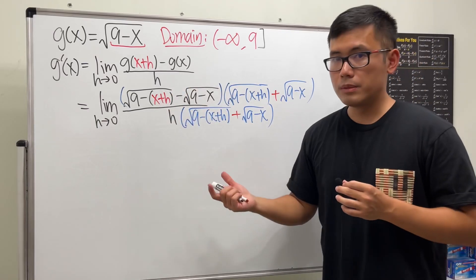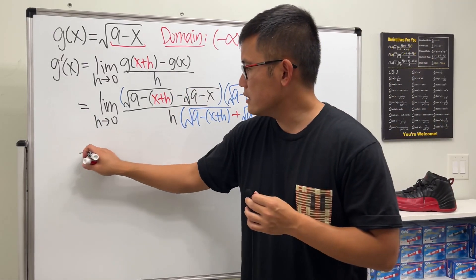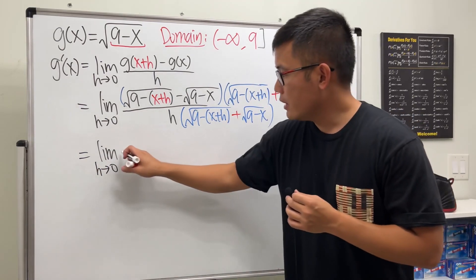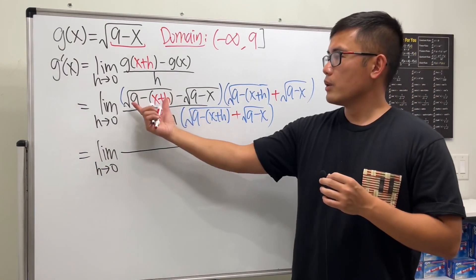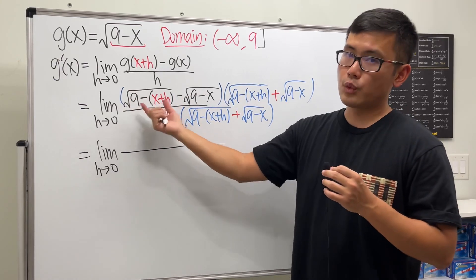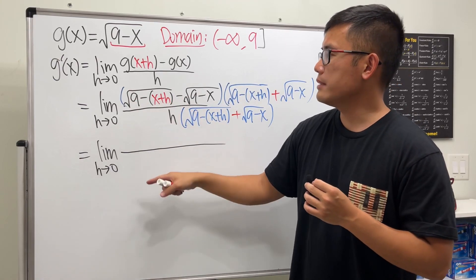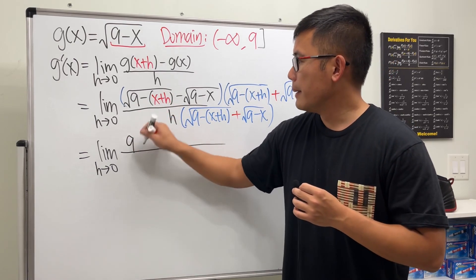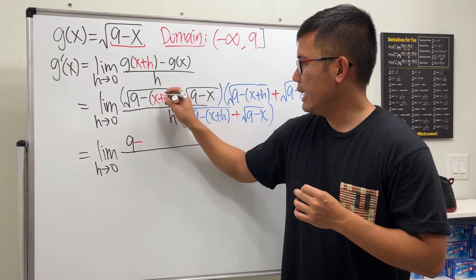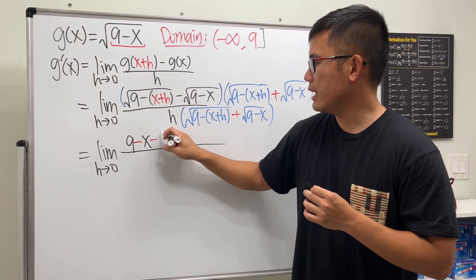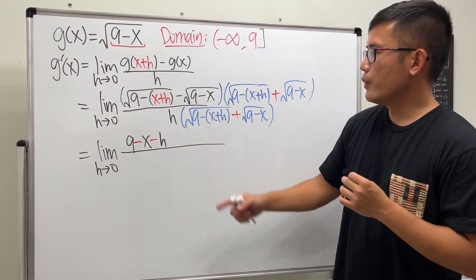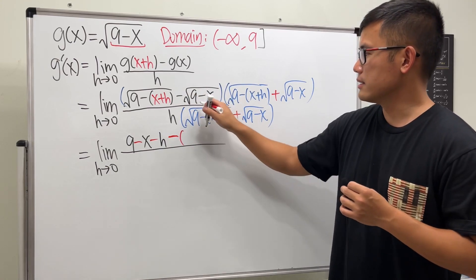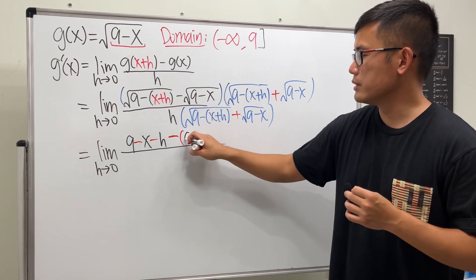To continue, we're just going to multiply out the top. We'll still write down the limit as h approaching 0. For the top, when you multiply out the conjugates, just take this and square that, so we just have this thing. Let me just also distribute the negative now. We will have 9 minus x and then minus h. And then we have the minus from the middle, and then the second thing is this thing squared, which is just 9 minus x.